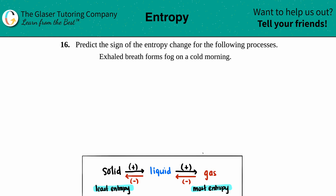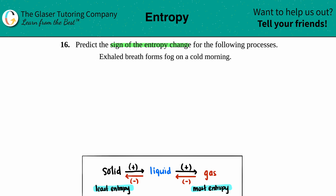Number 16: predict the sign of the entropy change for the following processes. We have this example: exhaled breath forms fog on a cold morning. We just want to find out what that entropy change is.